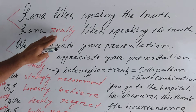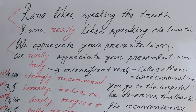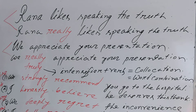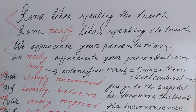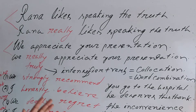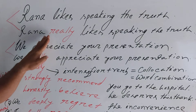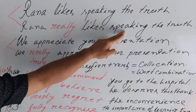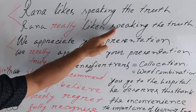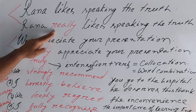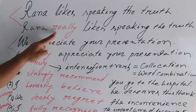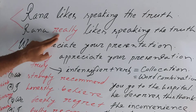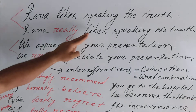In the same way: 'Rana dislikes speaking ill of others.' We know that speaking ill of others is bad manner. With an intensifier: 'Rana really or truly dislikes speaking ill of others.' Instead of 'really,' we can also use 'truly,' 'absolutely,' or 'undoubtedly' — for example, 'Rana undoubtedly likes speaking the truth.'